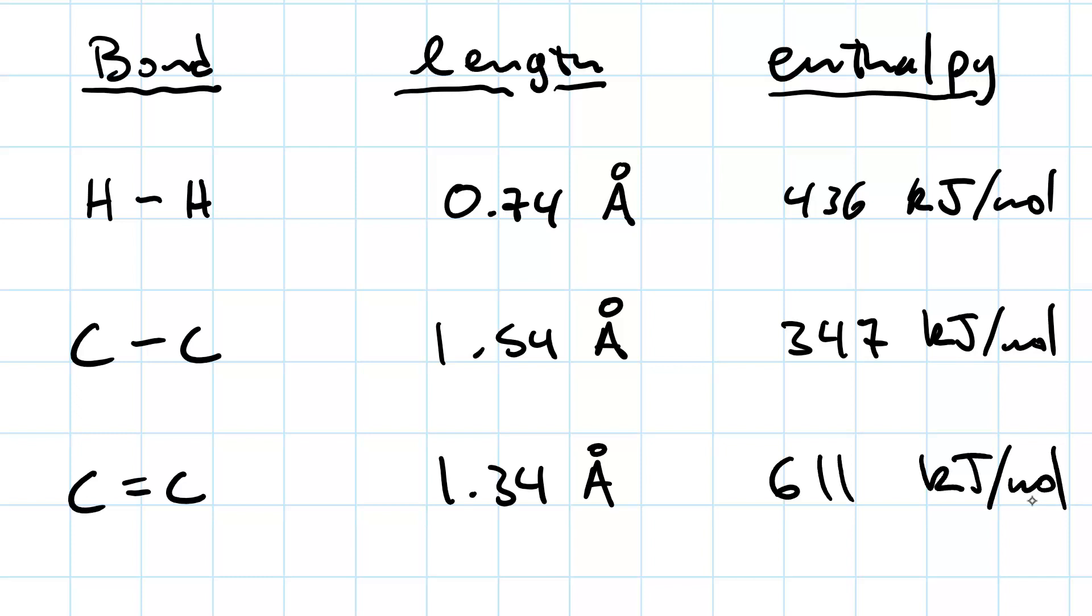In fact, the CC bond is sigma. The CC double bond is sigma plus pi. So the 347 kJ per mole is sigma, and 611 is sigma plus pi.